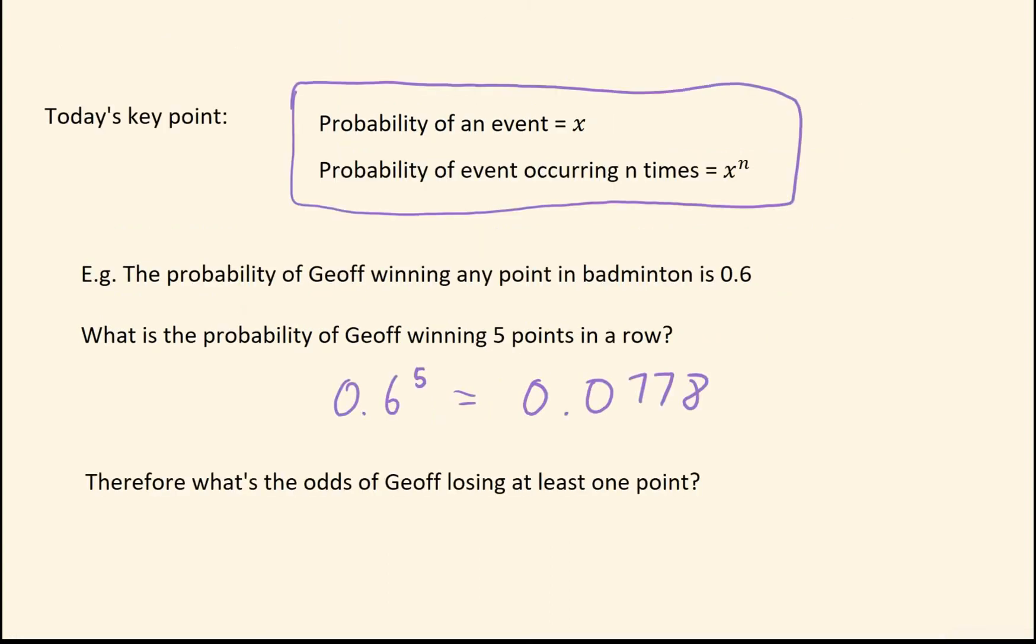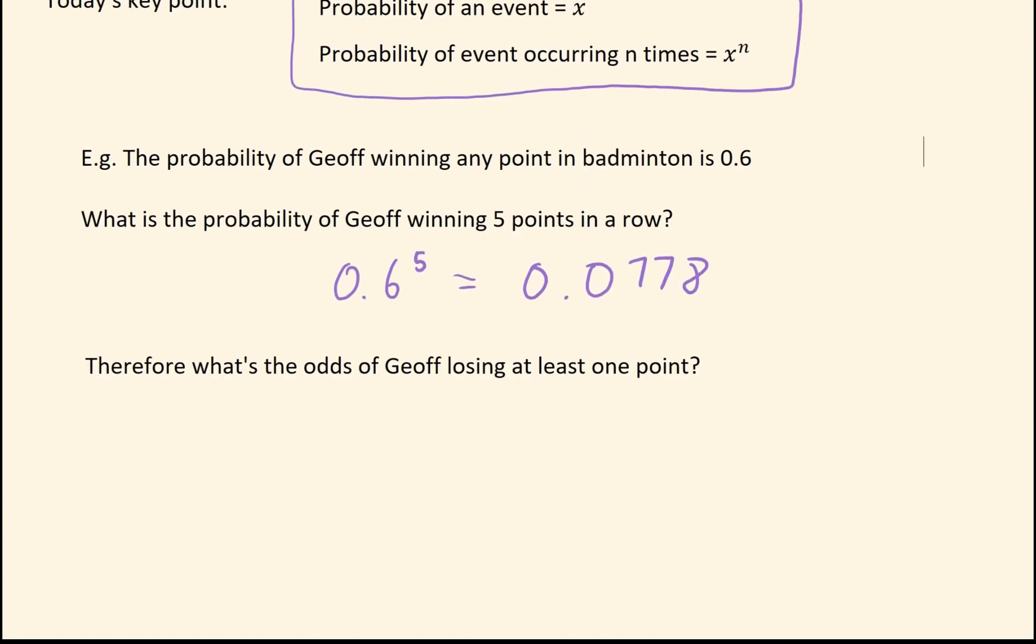One more thing to learn with this lesson. As you work that out, the odds of Geoff winning five points in a row is 0.0778. From there, we can work out the odds of Geoff losing at least one point. The way we do this is we have to consider the fact that Geoff winning five points in a row and Geoff losing at least one point, they're like perfect opposites.